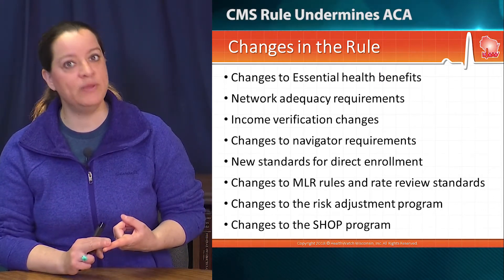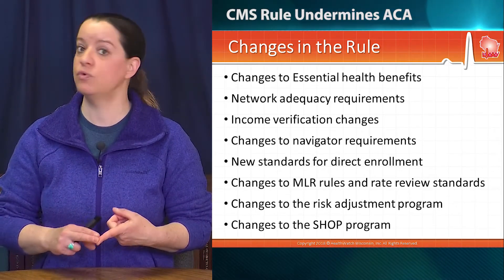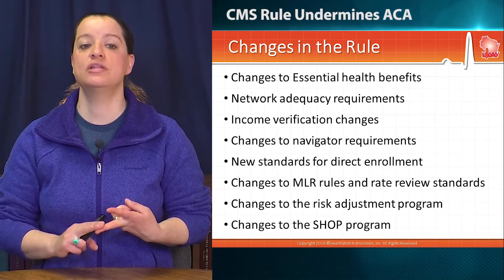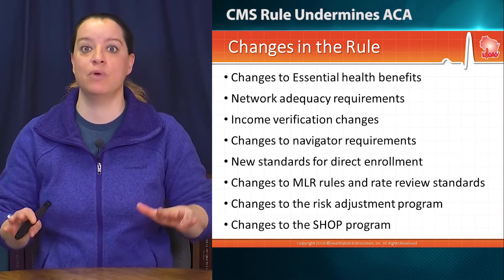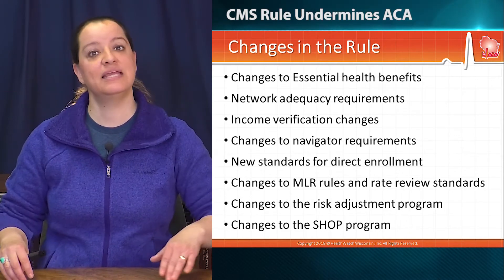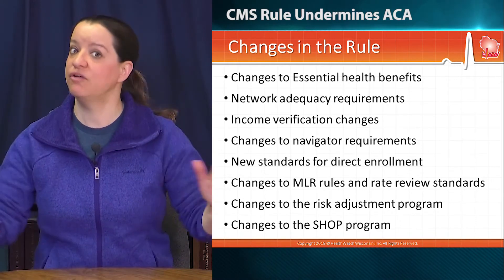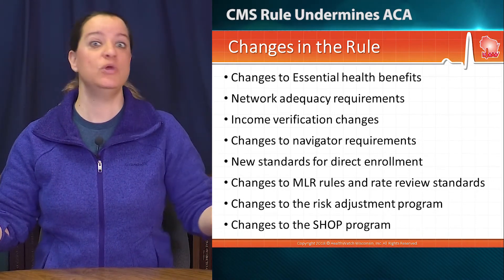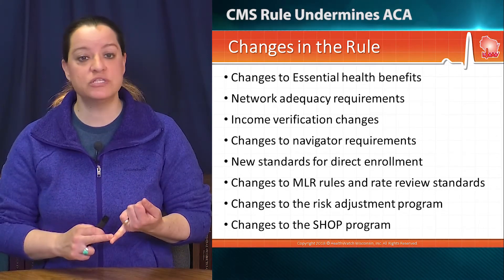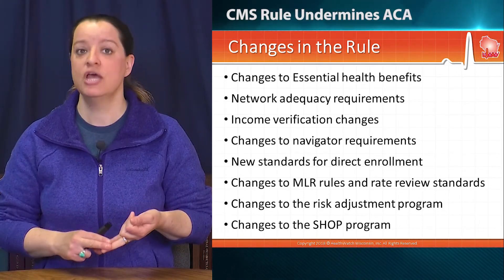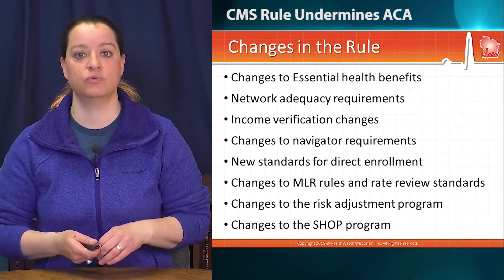New standards for direct enrollment, making it easier for insurance agents and brokers to make sure that people are getting into a plan — not necessarily a marketplace plan. Changes to the medical loss ratio and rate review standards could potentially be the most damaging, telling states that they can pick their own medical loss ratio if they think it's going to build stability in their marketplace, which kind of opens the door for the way we used to do insurance before the Affordable Care Act protections were instituted. Changes to risk adjustment and major changes to the SHOP exchange — that exchange for small businesses to purchase insurance as opposed to the individual market.